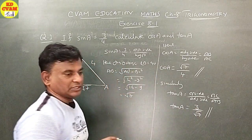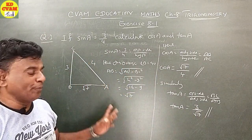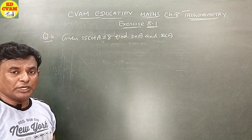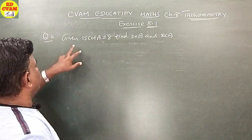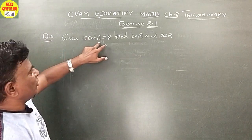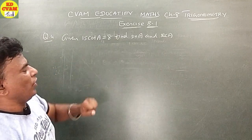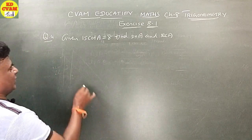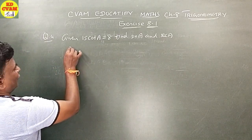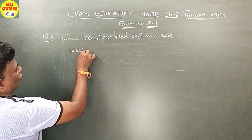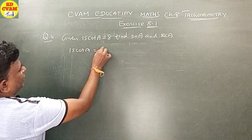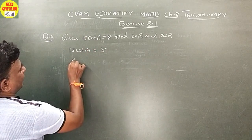This is your answer. I hope you understood. Question number 4: given 15 cot A is equal to 8.